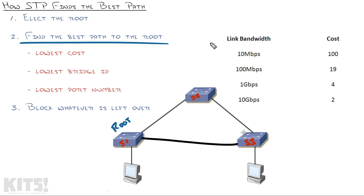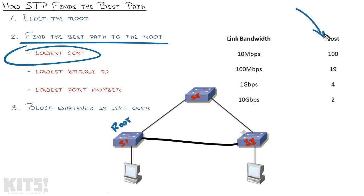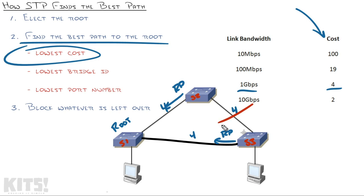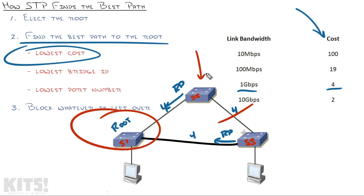All the other switches find the best path to the root, first by finding the lowest cost path — cost being a direct correlation to how much bandwidth is on those links. One gigabit per second links have a cost of 4. Everything's 4, this is the best way, that's my root port — this is the best way, that's my root port — and this one ends up getting blocked. The end result looks a little different from the previous slide, but that's just because the switch in the lower left is now the root bridge instead of the one at the top center.